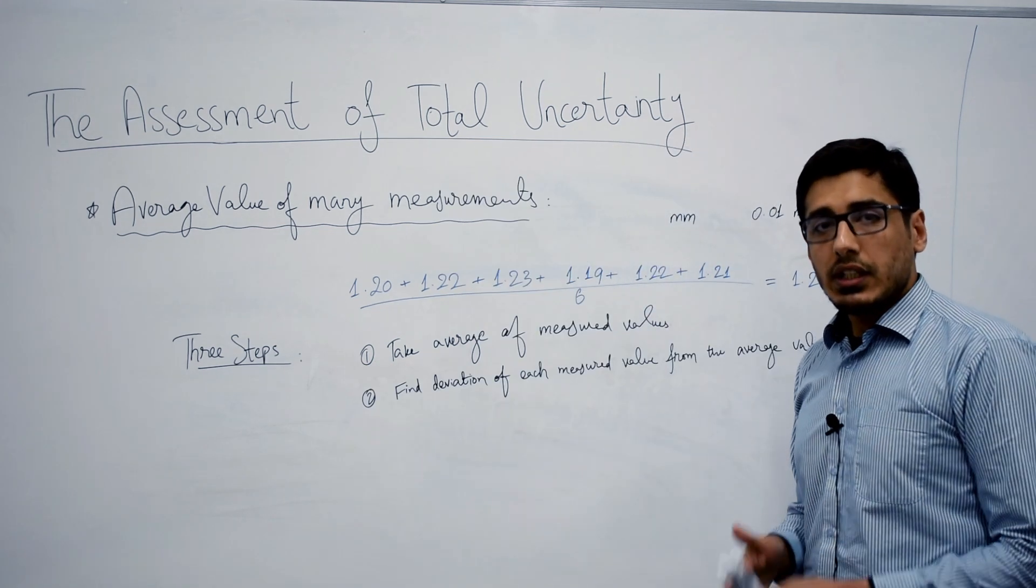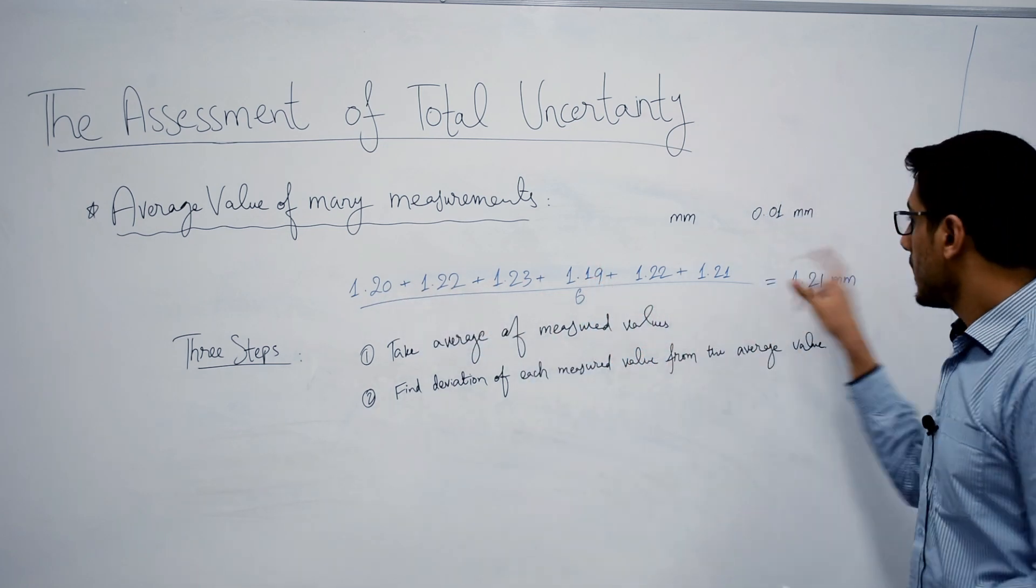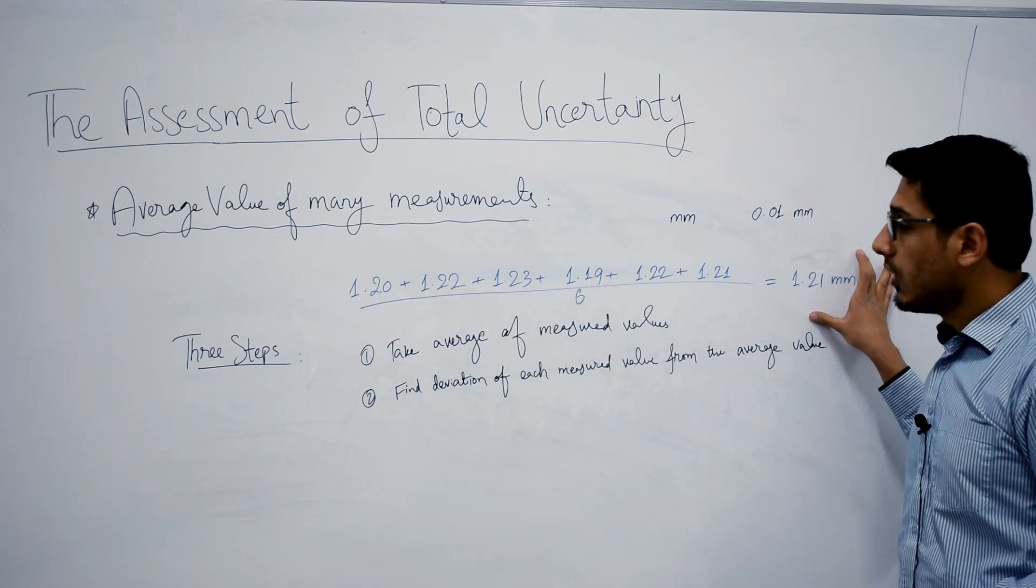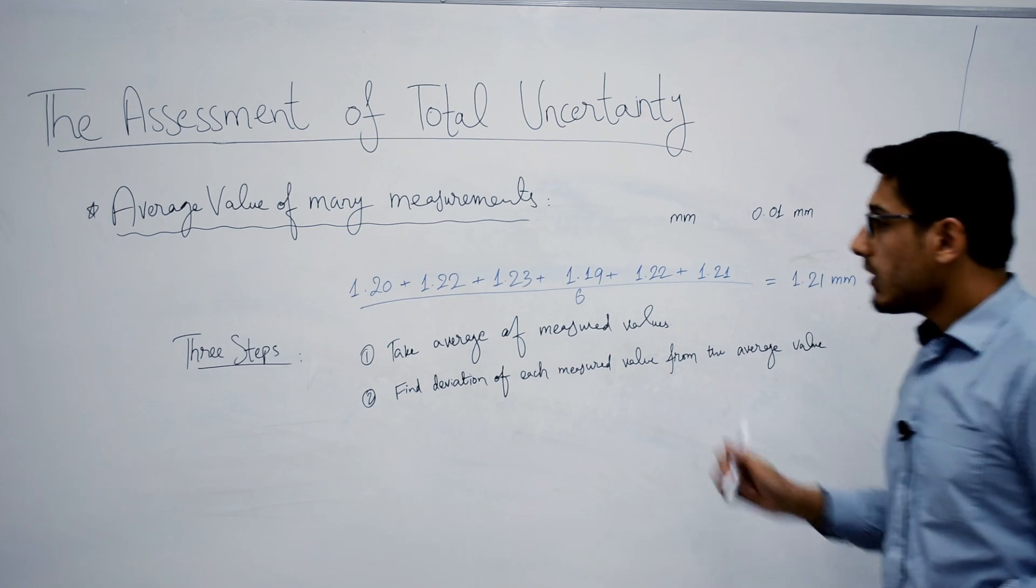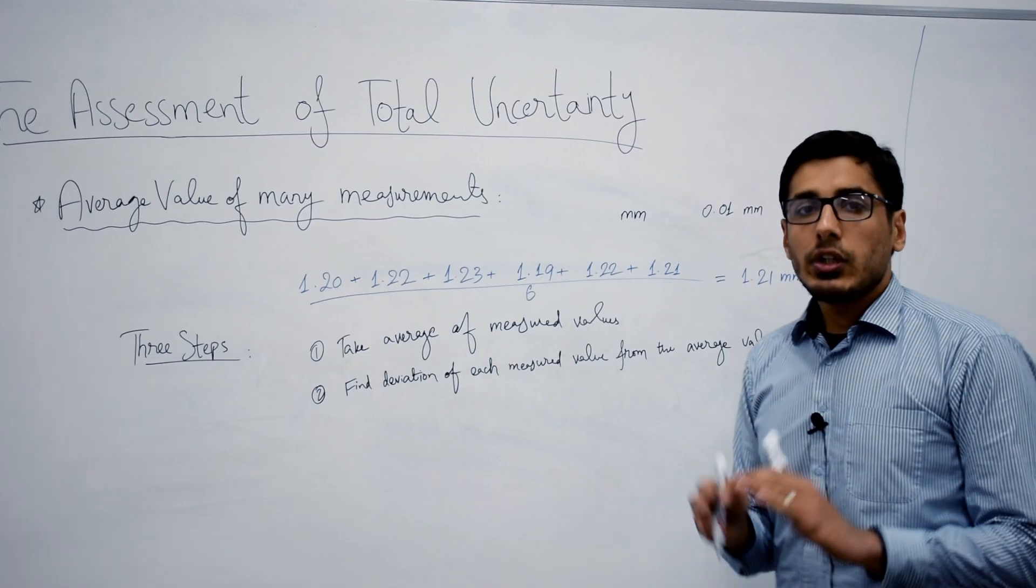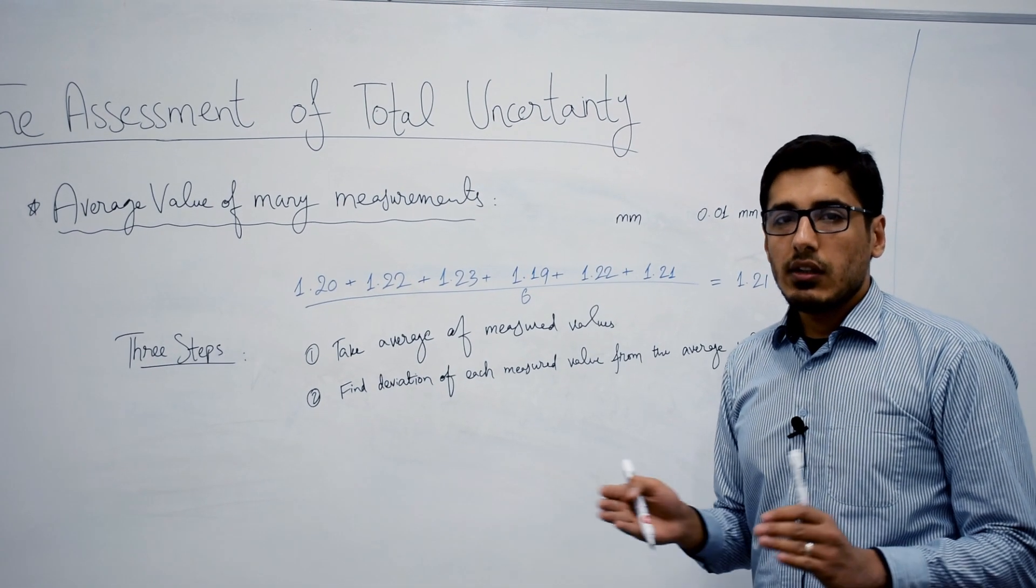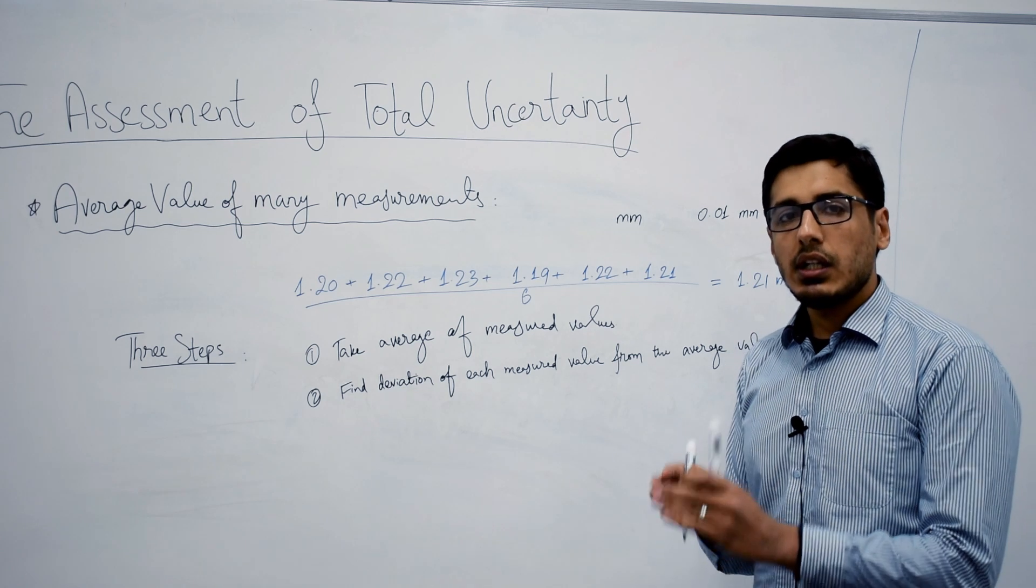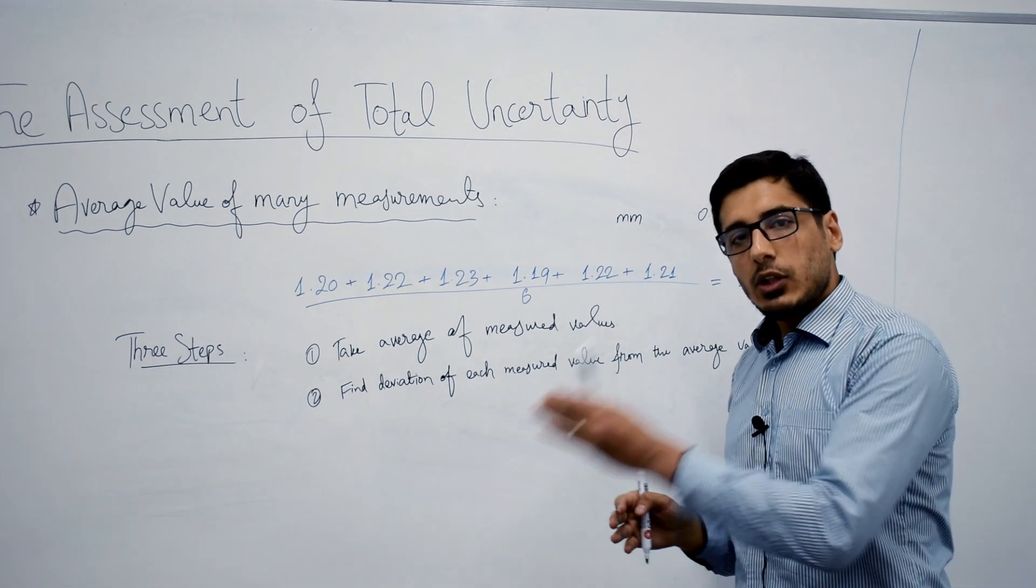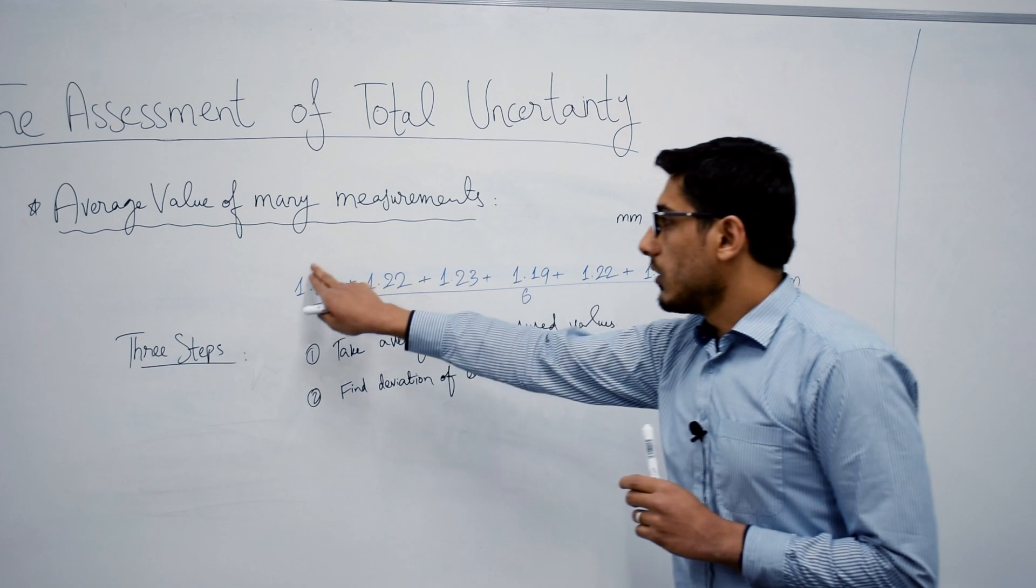How can we do that? In this case you don't need to worry about the negative or positive sign - you just need to find the difference between each measured value and the average value. Finding that deviation: 1.20 minus 1.21, don't care about the sign.